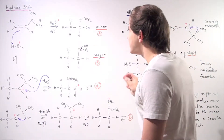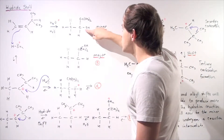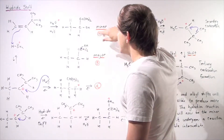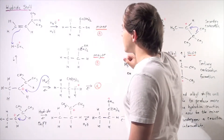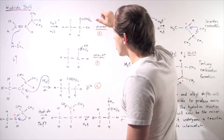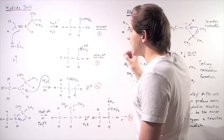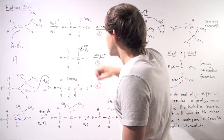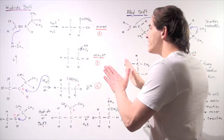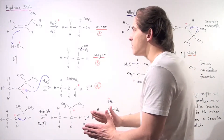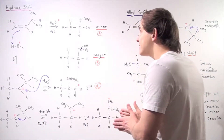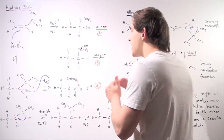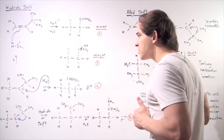The difference lies in the position of the hydroxide group. In Product A, we have the hydroxide group on one carbon, and in Product B, we have the hydroxide group on the next carbon. So what exactly is the mechanism that leads to Product A and Product B, and why is B preferred over A?